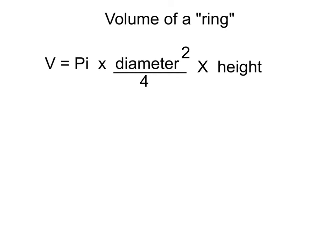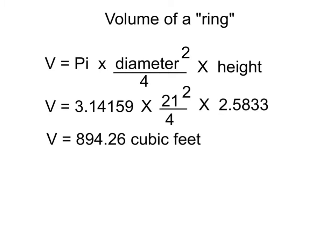Now we're ready to put this all together. Remember that the volume is equal to pi, which is 3.14159, multiplied by the diameter squared, divided by 4, and multiplied times the height. In this case, we will use the height of a single ring. Plugging in the numbers now, we're going to have the volume 3.14159 times 21 squared, divided by 4, times 2.5833. If you run these numbers through the calculator, we will find that the volume is 894.26 cubic feet.